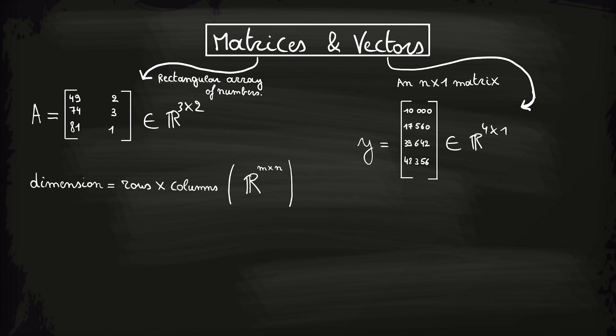However, as a vector is an n by 1 matrix and thus the amount of columns will always be equal to 1, we will just use this notation to denote a four-dimensional vector. As you might have noticed, we will use capital letters to denote matrices and lowercase letters to denote vectors.